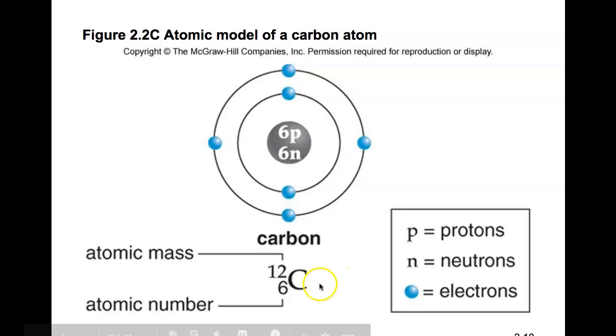In this case, we have 6 protons, and we should have 6 electrons. Let's count them. In the first orbital, we have 2. In the second orbital, we have 4. 4 plus 2 is 6.